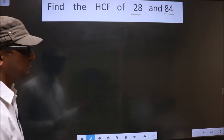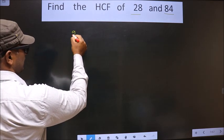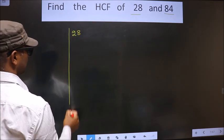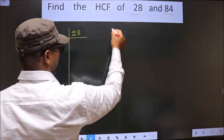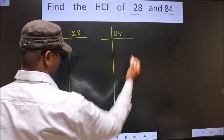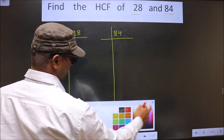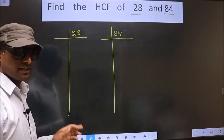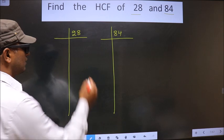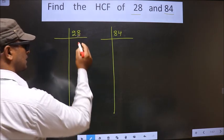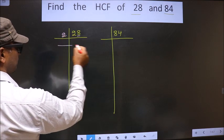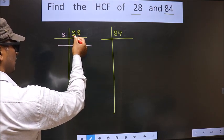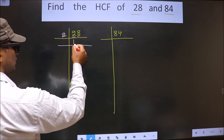That is 28 and 84. For this number, the last digit is 8 which is even, so we take 2 here. First number is 2. When do we get 2 in 2 table? 2 times 1 is 2.